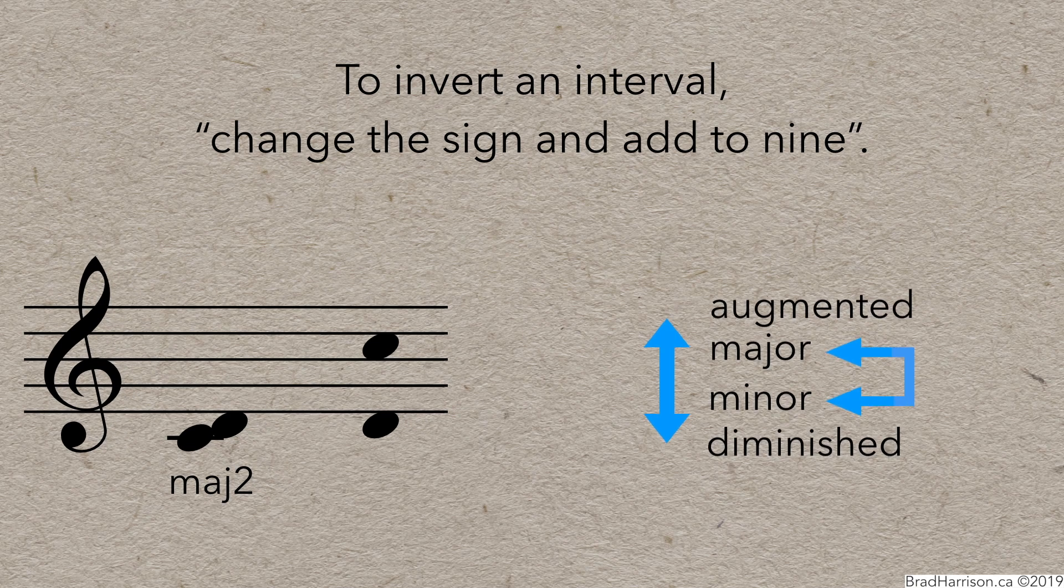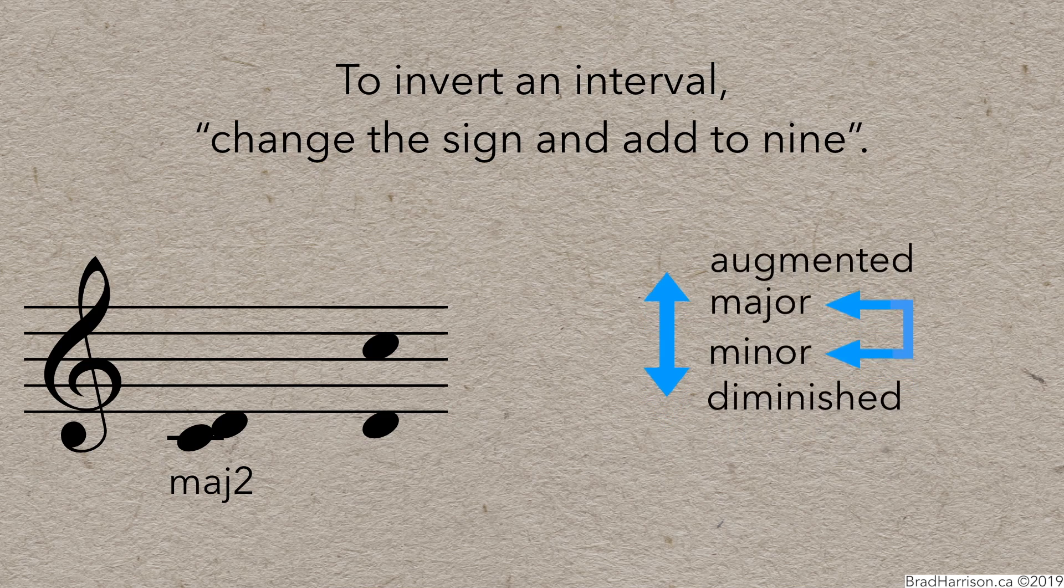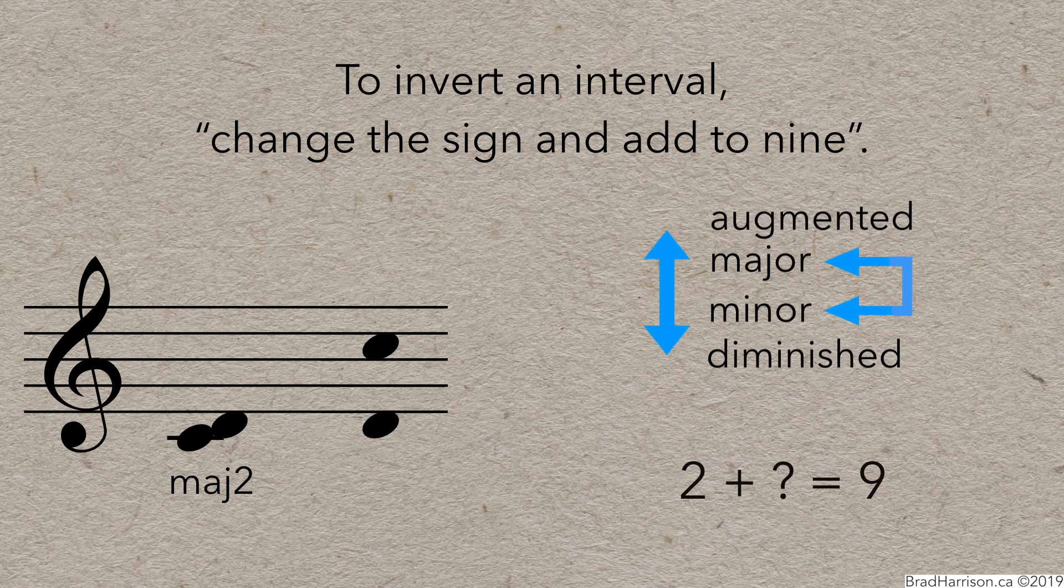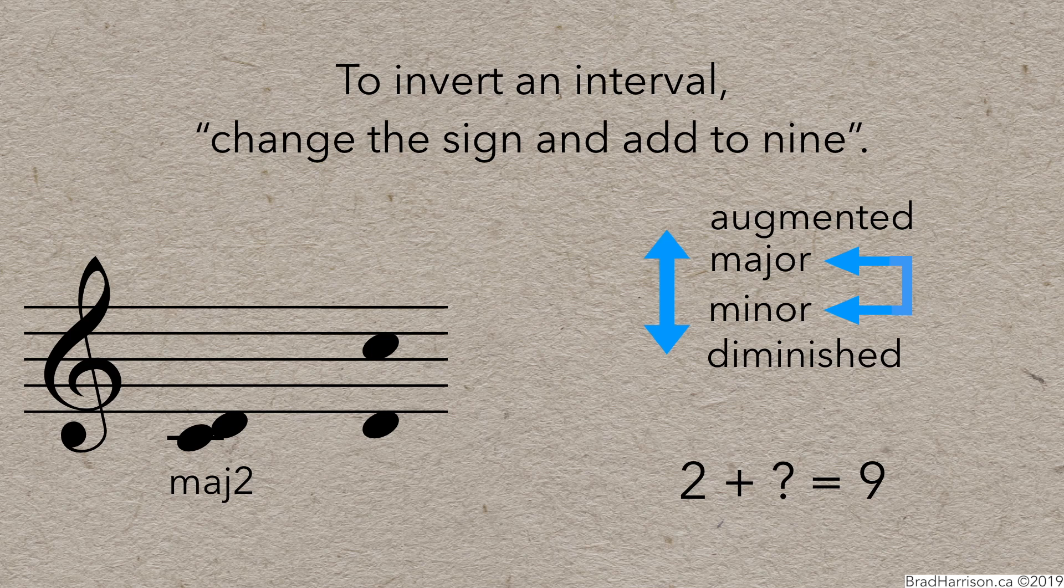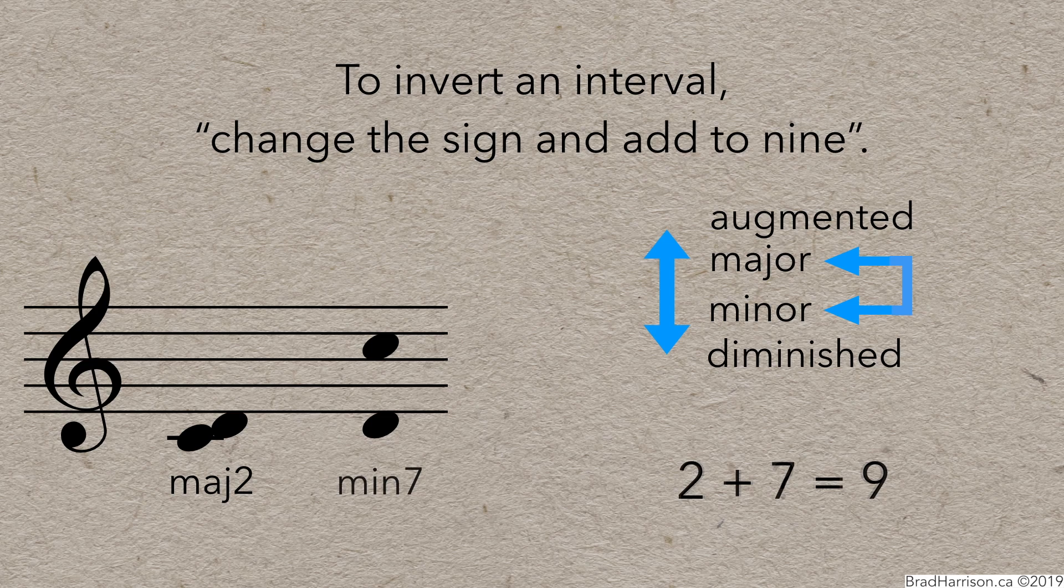If you invert a minor interval, you'll always get a major interval. And the value of the intervals will add up to 9. So, the interval of a major 2nd inverts to a minor 7th. Because you change the sign, or quality, from major to minor, and 2 plus 7 adds to 9.